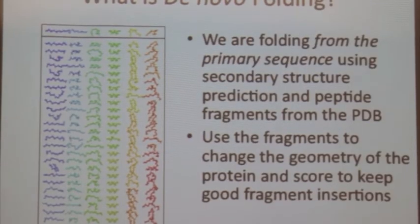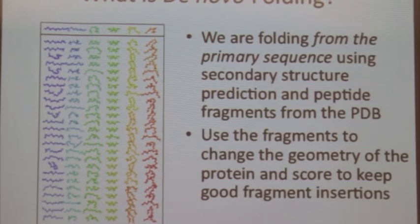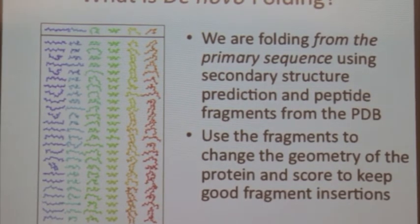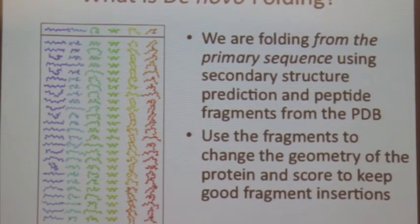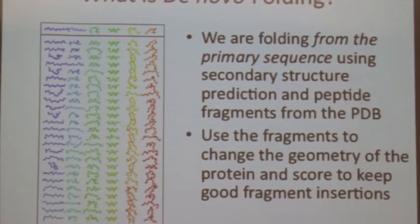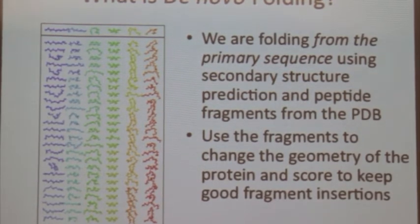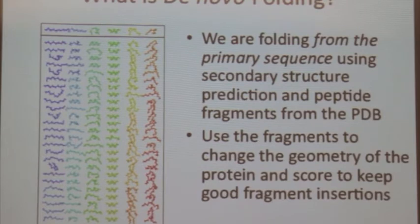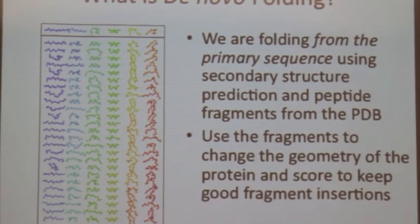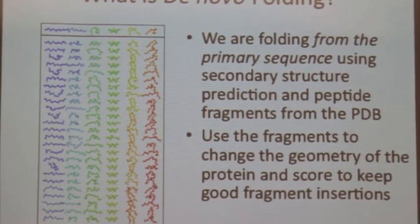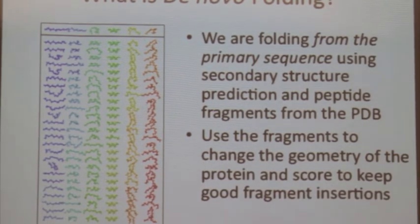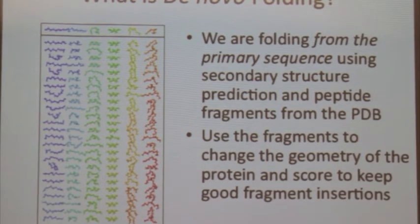So what is de novo folding? Basically what we're saying is we're folding from the primary sequence of your protein. So not really, as opposed to using a template like you would on comparative modeling. And we use fragments generated from the protein database to do this. And what you do is you basically divide up your primary sequence into three and nine residue sequence windows. And then you generate 200 fragments per sequence window.